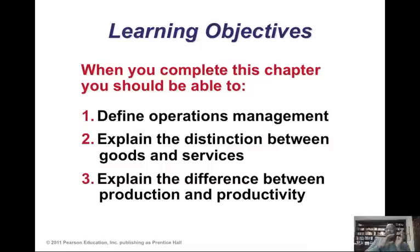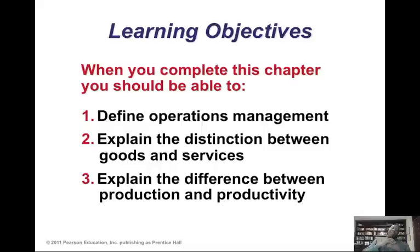We need to understand that there is a distinction between products and services, largely because there are implications for how we actually manage the processes and operations that go into creating them. One of the age-old objectives in managing operations has to do with making sure that whatever operation system you're managing is as productive as possible. Production is where you actually produce the good or the service, but productivity is how you utilize the resources that go into that production.